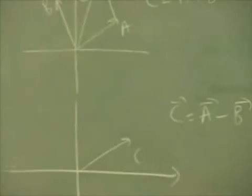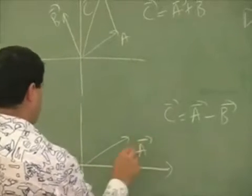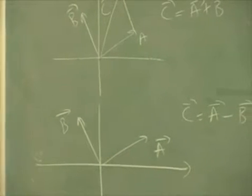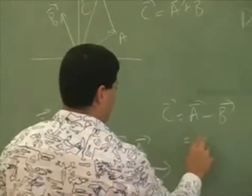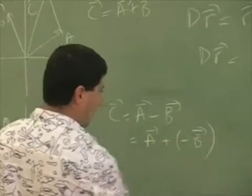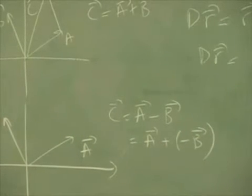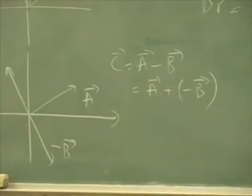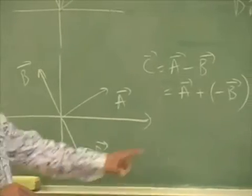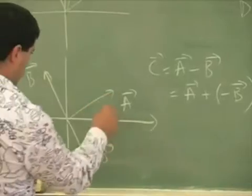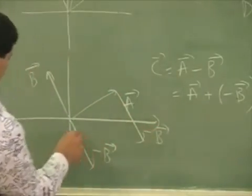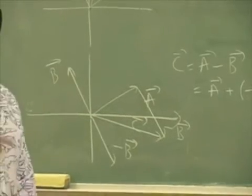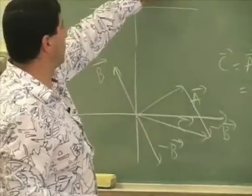Say this is vector a and this is vector b. If you want to subtract them — doing a plus negative-b — it's like inverting b. You flip b to get negative-b, then add negative-b to a. That gives you vector c. So when you're subtracting two vectors, the result is quite different from when you're adding them.